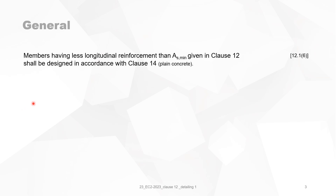Members having less longitudinal reinforcement than AS min given in clause 12 could be designed in accordance with clause 14, which is plain concrete. So this means that when you do not put enough minimum reinforcement in your structure, then you cannot see it as reinforced concrete — it's just plain concrete, and then there are totally different rules that you have to apply.